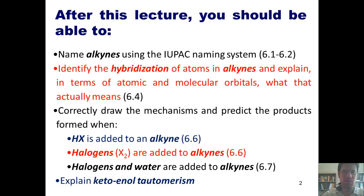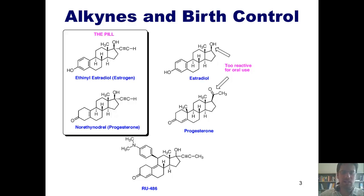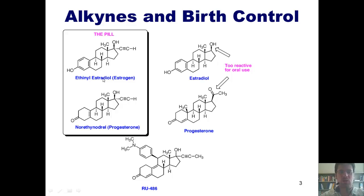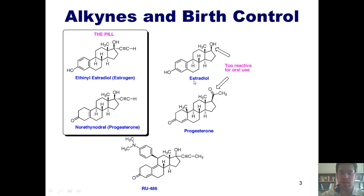Before we get started, I want to show you something really cool. In North American culture, we frequently hear people talk about contraception by using the phrase 'the pill.' The pill is actually comprised of two different compounds: ethinyl estradiol, whose structure is shown right here, and norethynodrel, whose structure is shown here. Each of these compounds are derivations of estradiol and progesterone. Ethinyl estradiol — a derivative of estrogen — has a carbon-carbon triple bond right here at this position. In other words, it's an alkyne. This molecule is an orally bioactive estrogen used in many formulations of oral contraceptive pills.